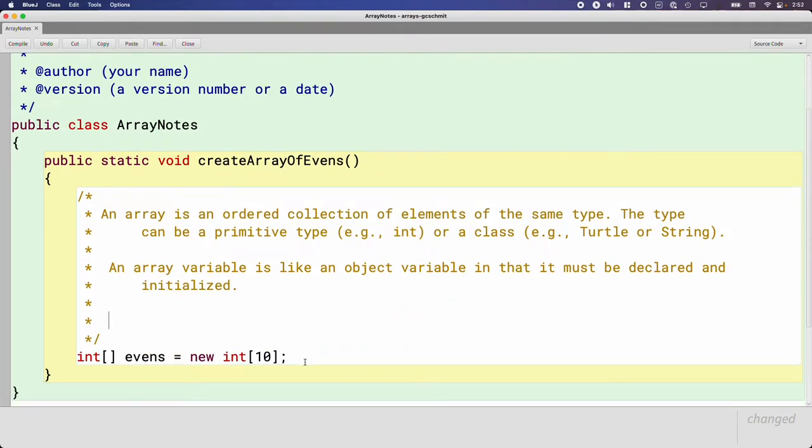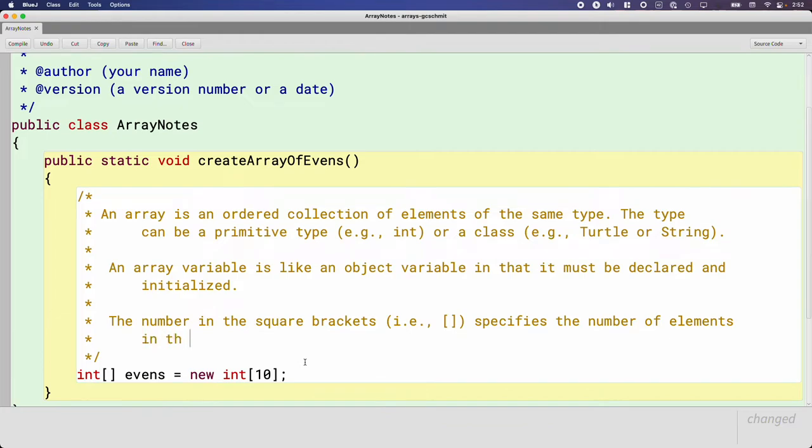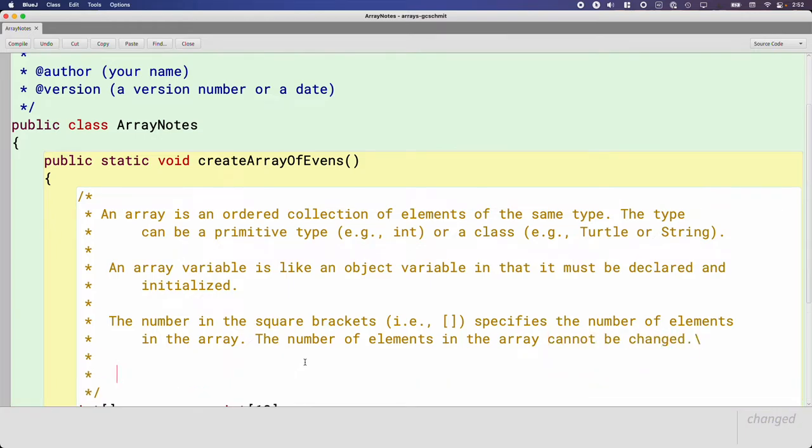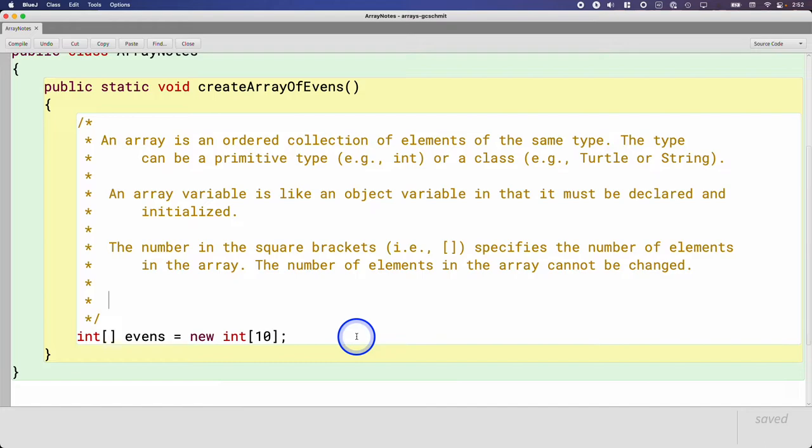Much like we would have a reference to a turtle in the computer's memory, here we have a reference to these series of pockets in the computer's memory, which stores all the values in the array. So conceptually, it's very similar to what we started the year with in terms of objects. The number in the square brackets, the number specifies the number of elements in the array. Here's another limitation of an array. The number of elements in the array cannot be changed.